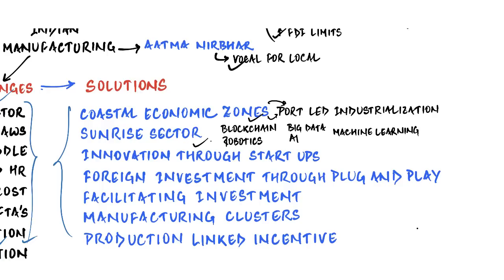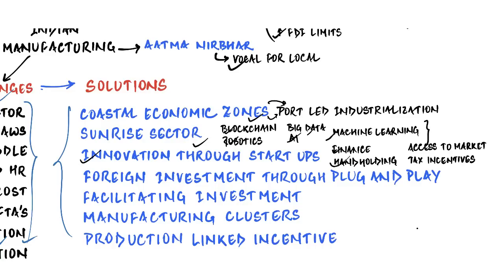There is also a need to focus on sunrise sectors based on new-age technologies such as blockchain, robotics, machine learning, big data, and AI — leveraging opportunities created by Industry 4.0. Innovation through startups must be boosted by creating a conducive ecosystem with access to finance, hand-holding, market access, and tax incentives. Regarding foreign investment, India should adopt a plug-and-play model — where investors are provided with land at affordable cost with all necessary pre-clearances including environmental clearances, in-built office spaces, and basic facilities like electricity and water, kick-starting production with minimal hurdles. States like Maharashtra and Haryana have already adopted this model.